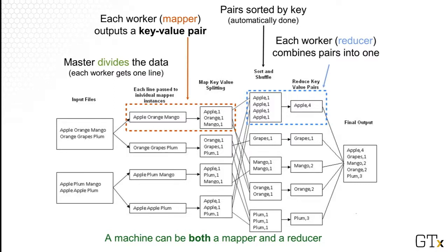Now we see concretely how the master computer divides up the work, where each piece is a single file. Suppose the first file has two lines. The first line — apple, orange, mango — becomes one unit of work. This line is processed by a mapper computer in the map phase, where data and computation are divided up into pieces, and each mapper computer handles one piece independently and in parallel.